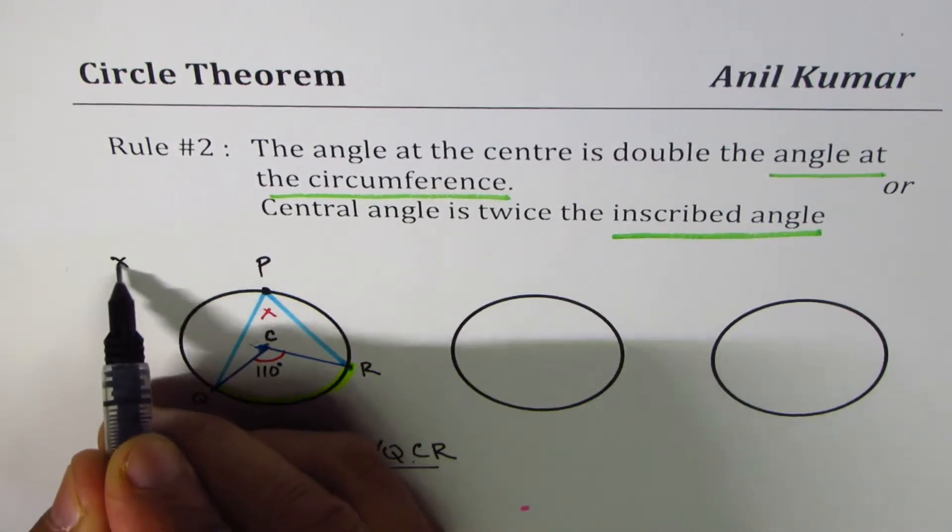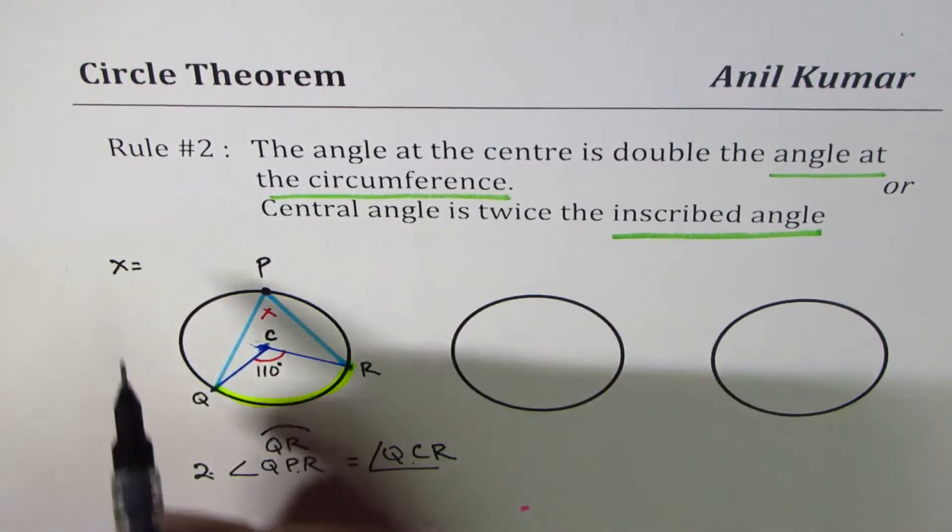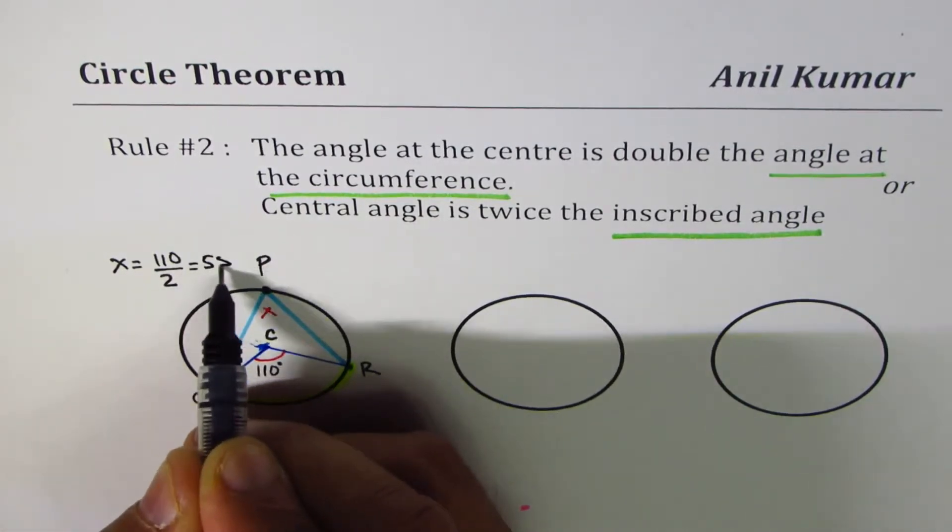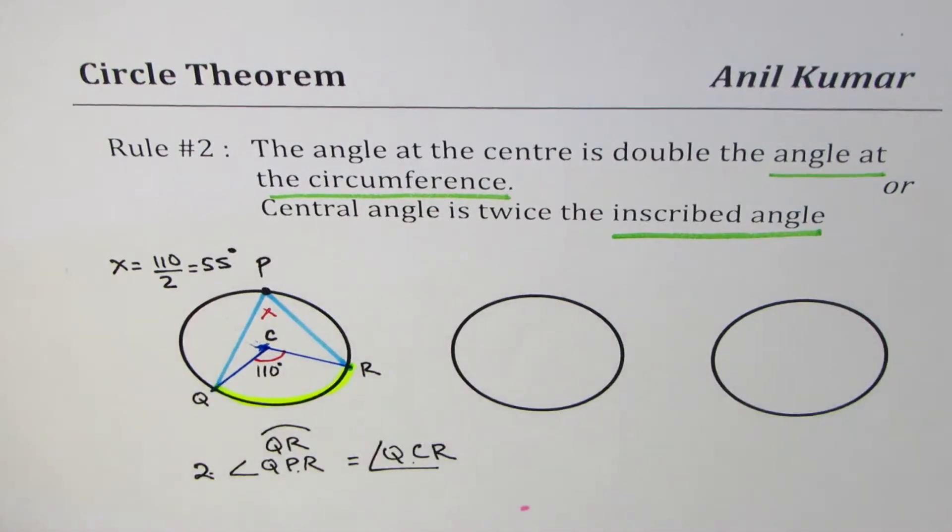X is equal to half of 110, right? 110 divided by 2, which is 55 degrees. So that is how you could find the angle.